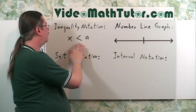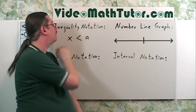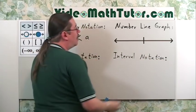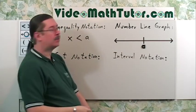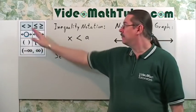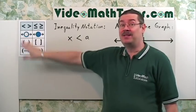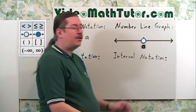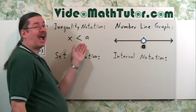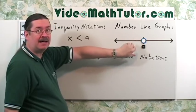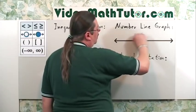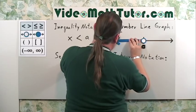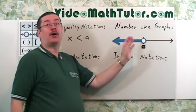Let's start with x is less than a. First, create the number line with a tick mark and put the value a. Since it's a strict inequality, place an open dot above the a. We want x's to be less than a, so values less than a are to the left of a — shade to the left. That represents all values of x that are less than a.